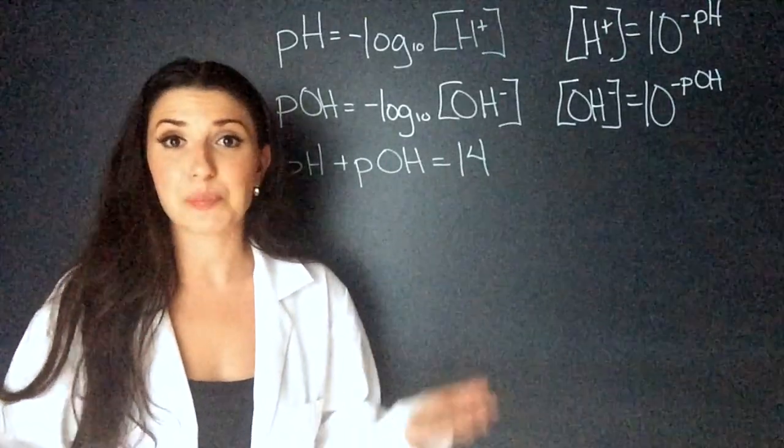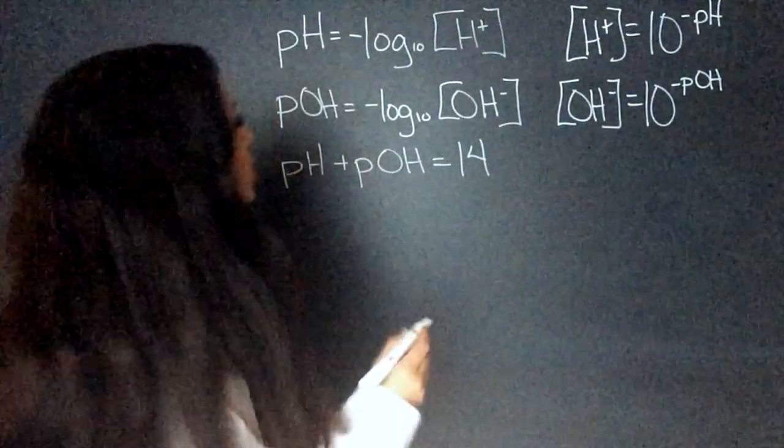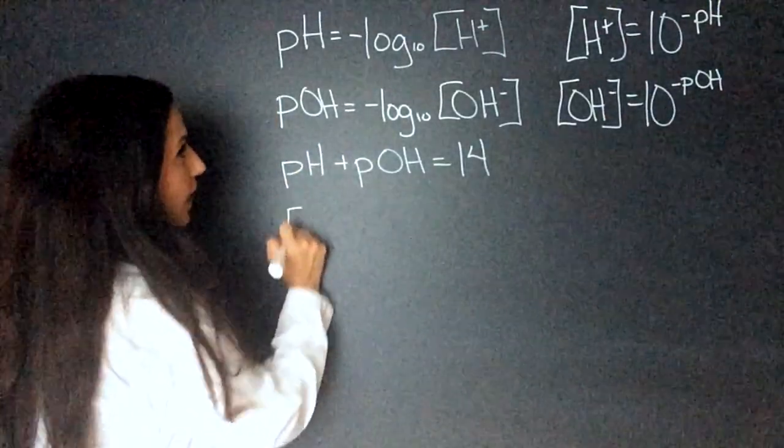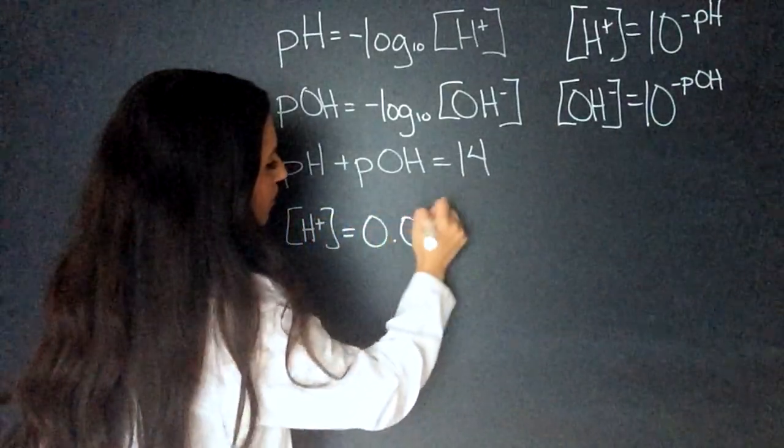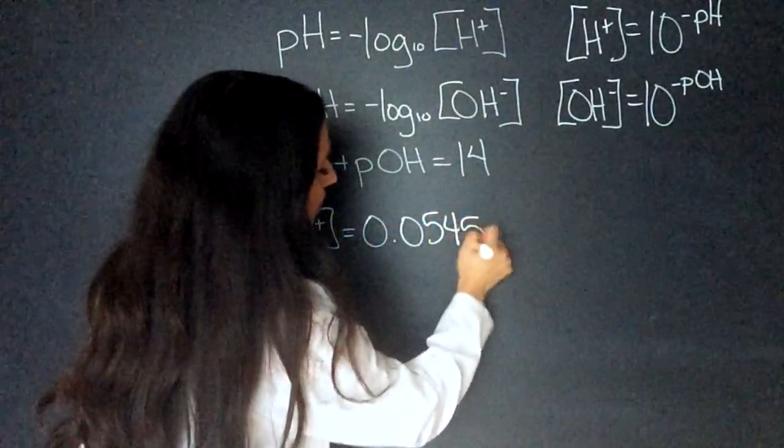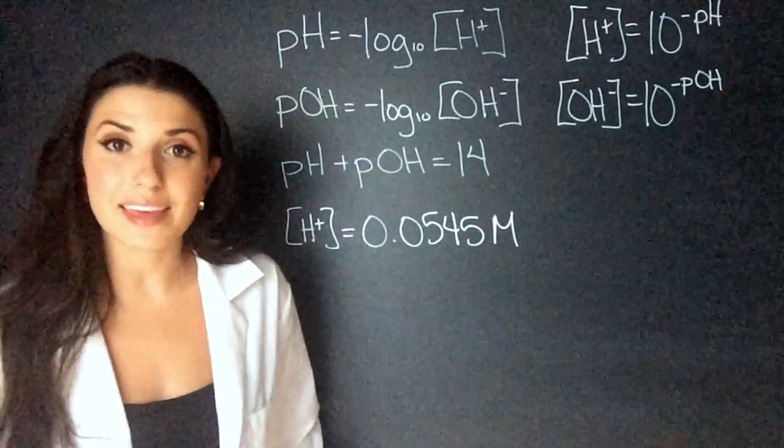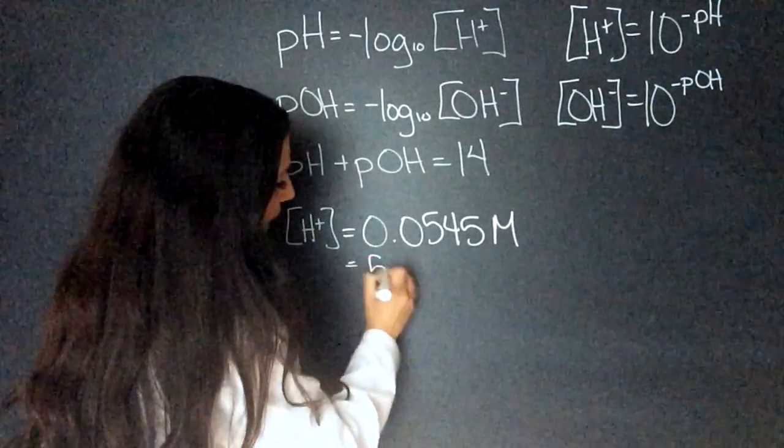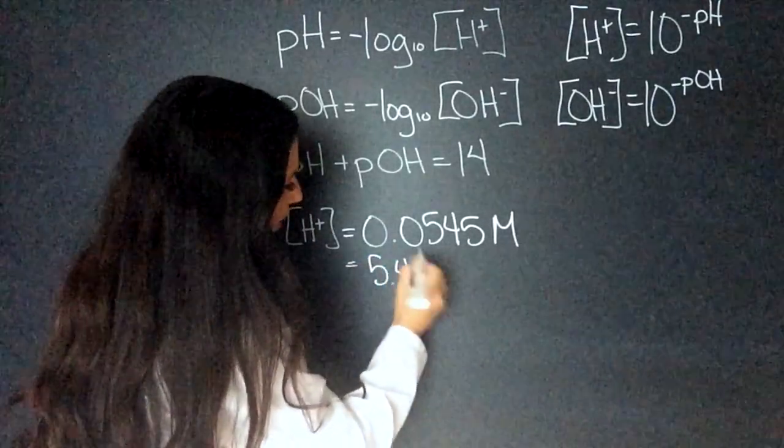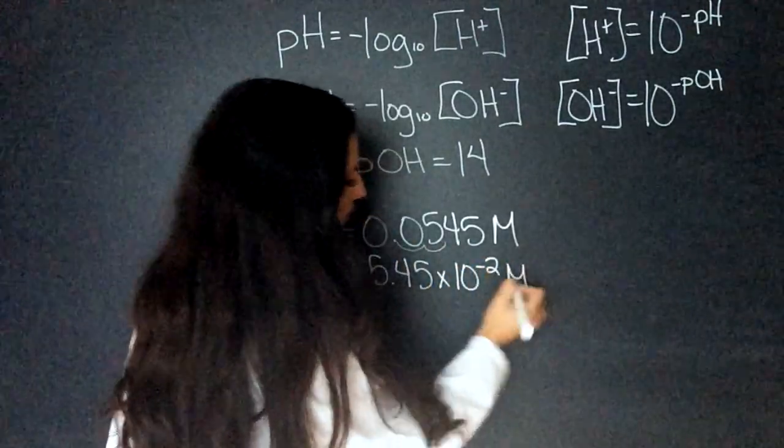This is a classic, plug it into the formula. But I'll do this in a way that a lot of students get tricked on. So, let's say that we know that the hydrogen is 0.0545 moles per liter. And I'll just use molarity. But let's say they gave it to us in scientific notation. We would have 5.45 times 10 to the negative 2 molarity.